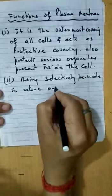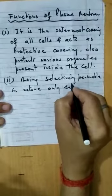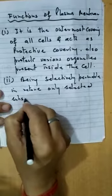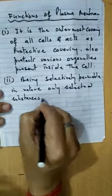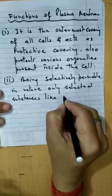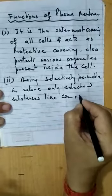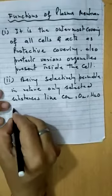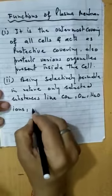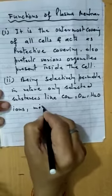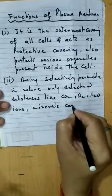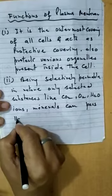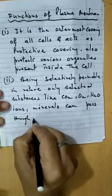The plasma membrane is selectively permeable in nature. Only selected substances like carbon dioxide, oxygen, water, ions, and minerals can pass through it.